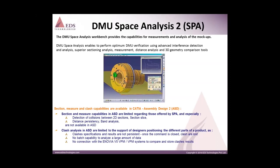We can compare two geometries — revision 1 or revision 2. Whatever the modifications or changes, they will be highlighted in color code. It will measure sections, it will allow you to section, measure, and clash capabilities are available in CATIA assembly designs.